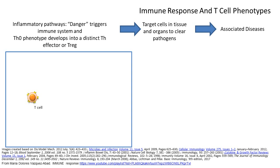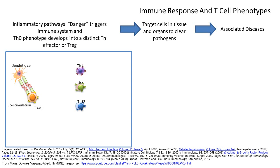How does a naive T cell differentiate into the three key TH phenotypes known to respond to different danger signals? The first thing that happens is that for a naive T cell to become either a TH1, a TH2, or a TH17, it has to be presented a danger signal — an antigen — by an antigen-presenting cell. The dendritic cell is usually the most common cell that will present the antigen to the T cell, but many other cells can do so. The dendritic cell presents the epitope that the T cell will recognize through the T cell receptor.